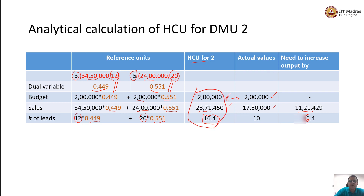Once you find the coordinates of the HCU, you have a prescription for DMU 2. DMU 2 should definitely increase its sales and definitely increase the number of leads it generates. That is how you calculate the HCU in the case of two outputs and a single input. The only difference from the previous session is that we scale the dual variables so they add up to 1 rather than using the raw dual variables. We will end the session here. Thank you.